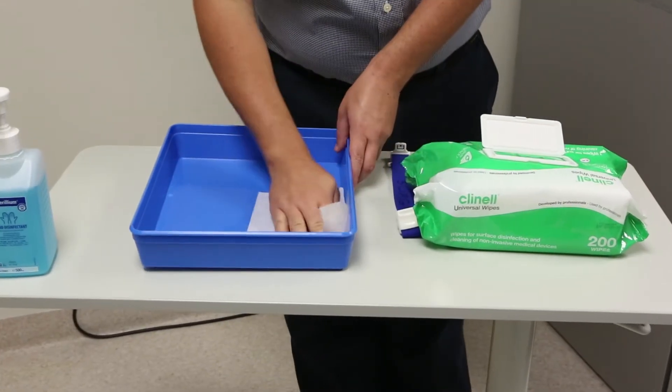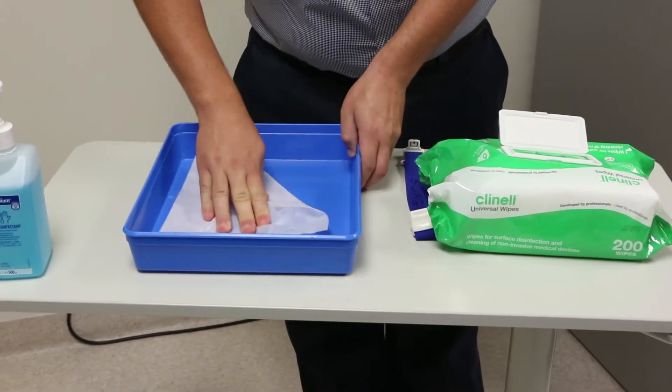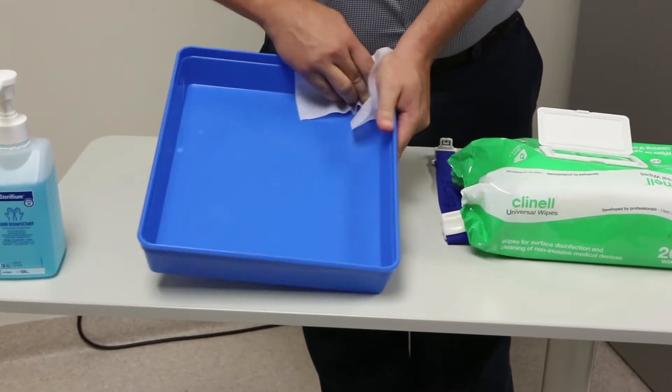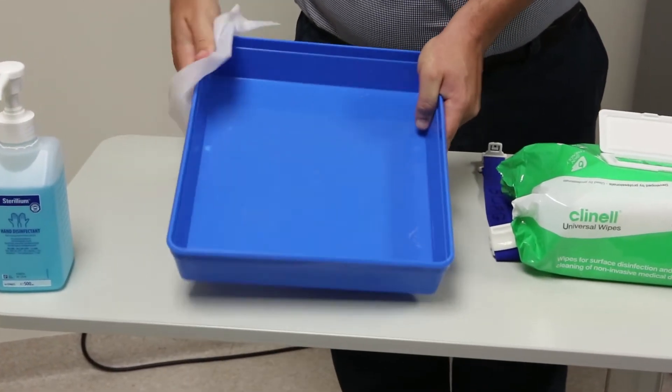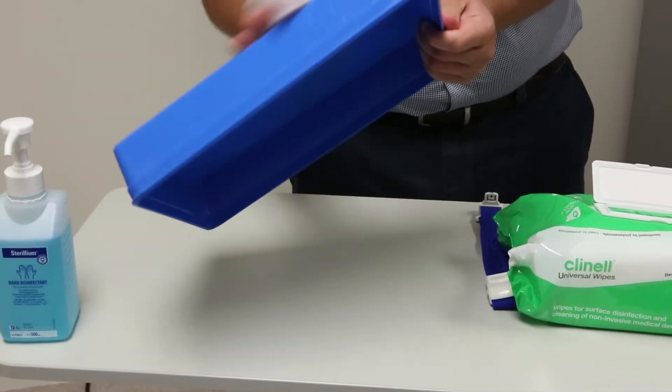Step 2. Plastic trays can be used as an aseptic field. Clean your plastic tray with 70% alcohol or detergent according to local policy. Clean the inside first, then the outside and allow to dry.